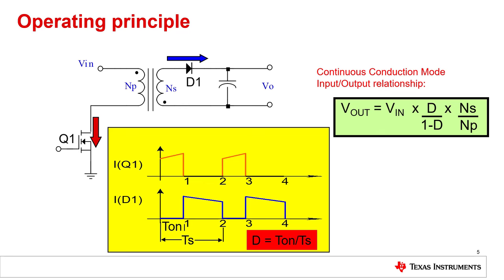Let's now focus on continuous conduction mode. Here you can see the input-to-output relationship in continuous conduction mode again. When we have a look at the current flowing in the transformer, it can be observed that current is flowing either in the primary winding or in the secondary winding, but never in both at the same time.